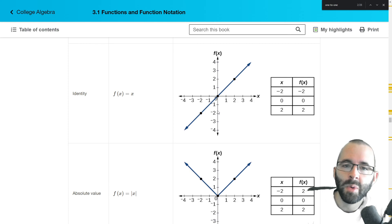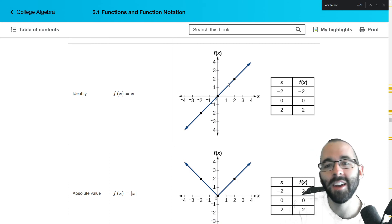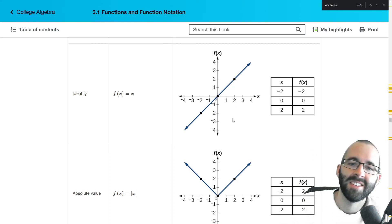The identity function is another one. Just lines in general are good to be familiar with. The identity function is just slope one, y intercept is zero. Again, this is also one to one. Sorry, this is also a function. These are all functions. That's hence toolkit functions. But this is one to one. It passes the horizontal line test.